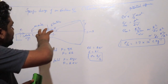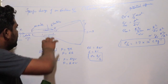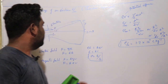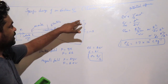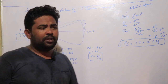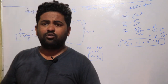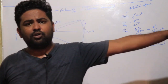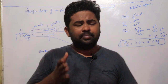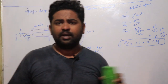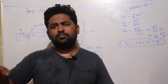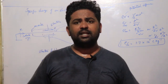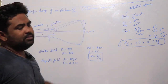When you turn on the electric field — plus and minus — the electrons, which are cathode rays, deflect toward the positive side. The magnetic field is then applied to oppose this deflection, so the beam will balance between the two fields.